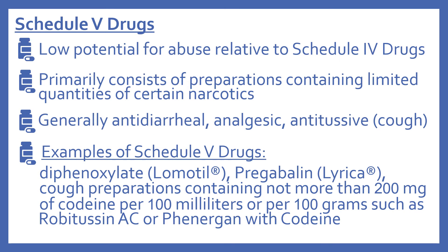And the schedule five drugs. These have a low potential for abuse relative to schedule four drugs and they primarily consist of preparations containing limited quantities of certain narcotics. Generally you can think of them as being anti-diarrheal, analgesic, or anti-tussive, which is for cough. Examples include diphenoxylate (Lomotil), a medication for diarrhea; pregabalin (Lyrica), a medication for nerve pain; and cough preparations containing not more than 200 milligrams of codeine per 100 milliliters or per 100 grams, such as Robitussin AC or Phenergan with codeine.